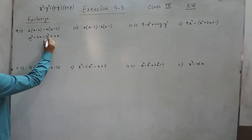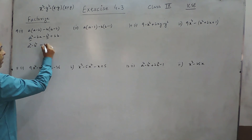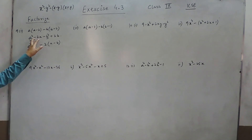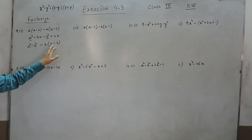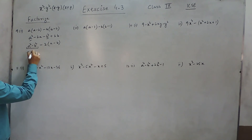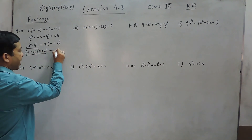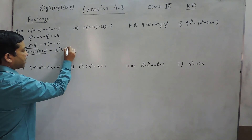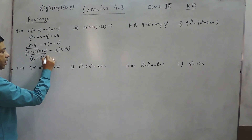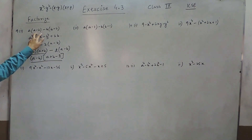Now we can take a squared minus b squared on one side, and minus 2a plus 2b can be written as 2 multiplied by a minus b. The factor a squared minus b squared can be written as a minus b multiplied by a plus b. We can take a minus b as common in these two terms; the remaining becomes a plus b minus 2. So this is the factorization of this question.